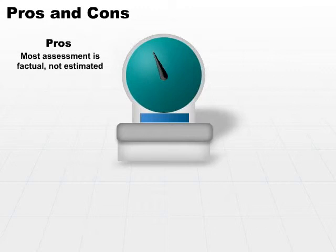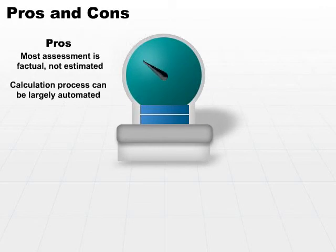Once you have the asset values and the probabilities as to how often a particular threat can occur, the remainder of the process can be largely automated. You can use a simple spreadsheet or specific software packages for quantitative risk assessment. In that case, the majority of the work is done upfront in collecting all the information.